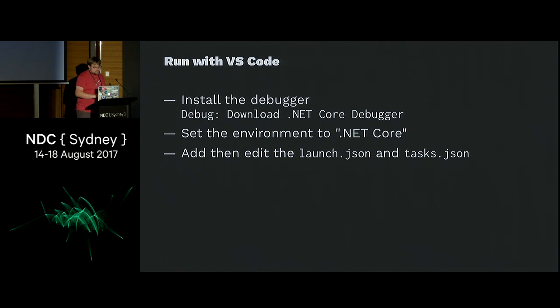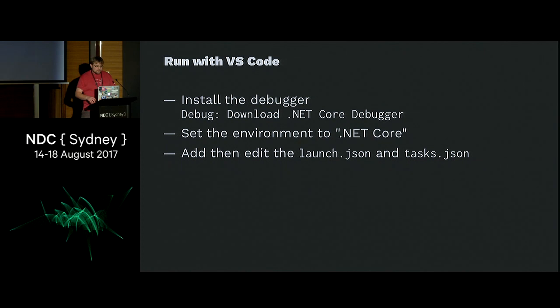And there's the little program we created in the previous slide. If you're using VS Code, the debugger doesn't come out of the box — Ionide doesn't include the debugger. You need to run the debug colon command in VS Code and it will download the Mono debugger. So even though you're using .NET Core, you still need Mono for some things.